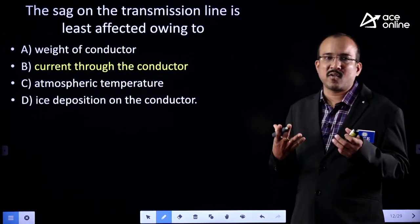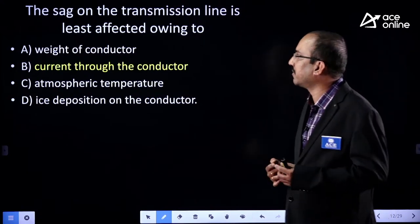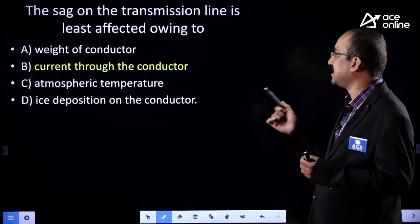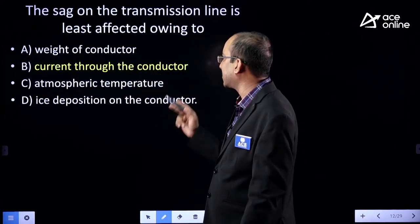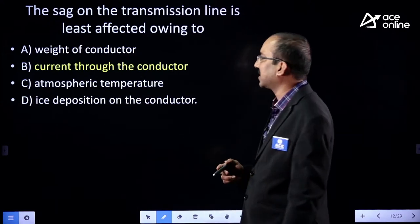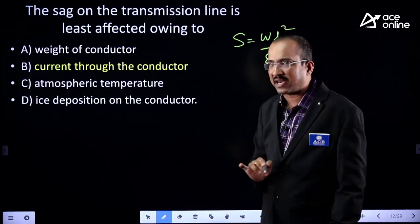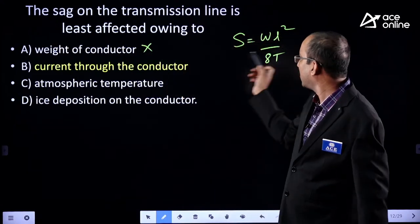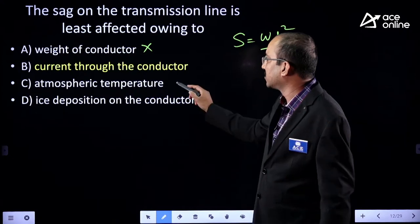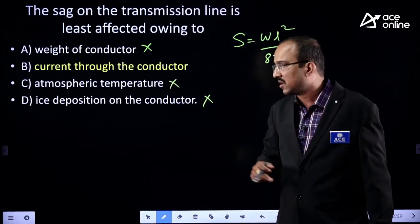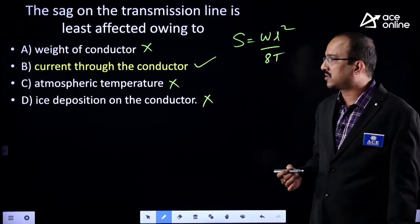You may find this type of objective question in PSUs like SSEJE, Genco, Transco, or RRBJ. The SAG on a transmission line is least affected owing to which factor? The options are: weight of conductor, current to the conductor, atmospheric temperature, and ice deposition on the conductor. The answer is current to the conductor.